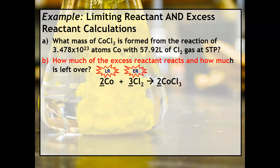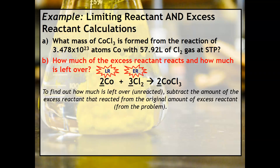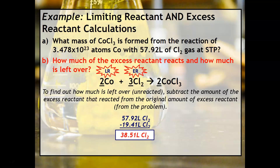The last part is how much is left over. To figure out how much is unreacted, take the result of the third dimensional analysis and subtract it from the amount given in the problem. According to the problem, we have 57.92 liters of Cl₂ available. We saw that 19.41 liters of Cl₂ reacts, so therefore 38.51 liters of Cl₂ is what is left over.